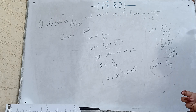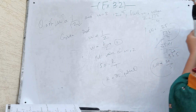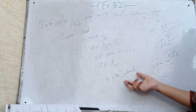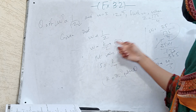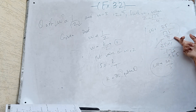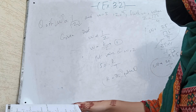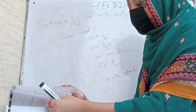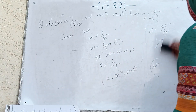Since w is inversely proportional to z, we have w equal to kz. We put the values of w and z to find k equal to 35, then substitute into equation 1 with z equal to 175 by 4. The required answer is w equal to 4 by 5.